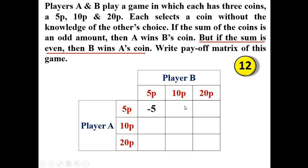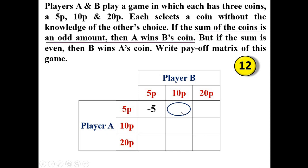Next, player A has 5 paise and player B has 10 paise. The sum is 5 + 10 = 15 paise, which is an odd amount. If the sum is odd, A wins B's coin, so the value is positive. B's coin is 10 paise, so the value here is plus 10.